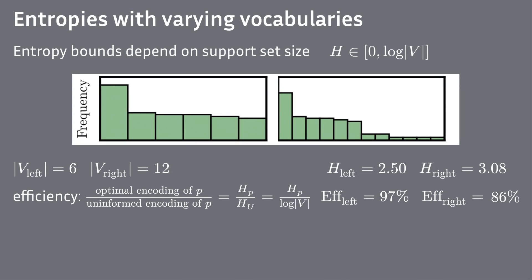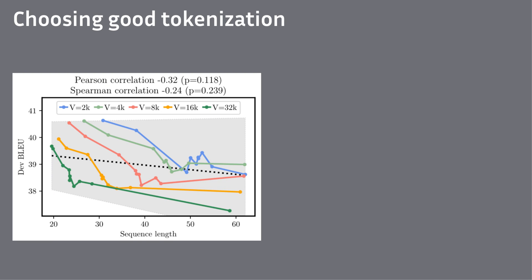The entropy efficiency of the right distribution is lower than the one of the left, because it's wasting capacity on its long tail. All of this was based on intuition, but let's look at some empirical results. Here each point is a different tokenization, either from a different tokenizer or with different parameters. Clearly, tokenization affects model performance a lot.